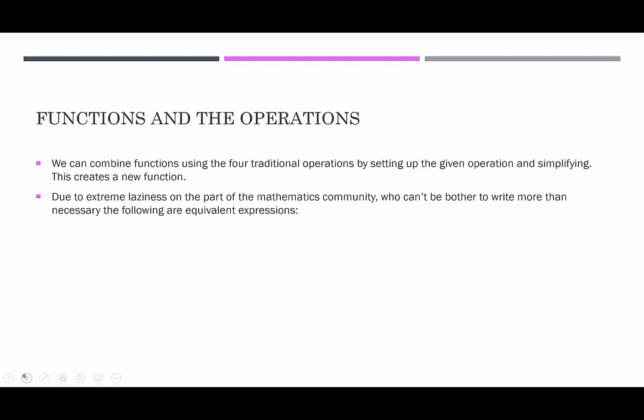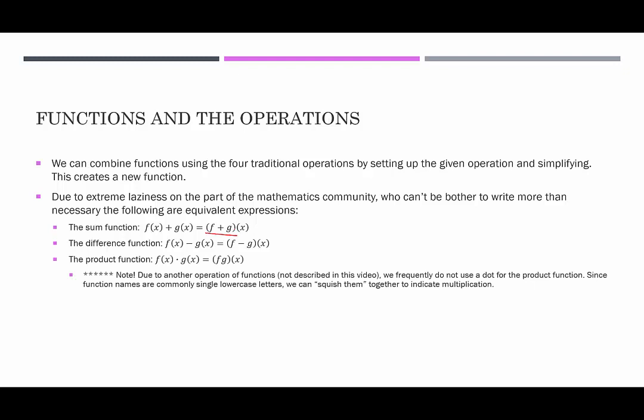Due to extreme laziness on the part of the mathematics community, who can't bother to write more than absolutely necessary, the following expressions are equivalent. For the sum function, if we have f(x) and g(x) we can combine their names. For the product function, rather than using a dot or times sign, we just put the two function names together — since they're typically lowercase letters, that implies multiplication. For the quotient function, we combine them into a fraction.